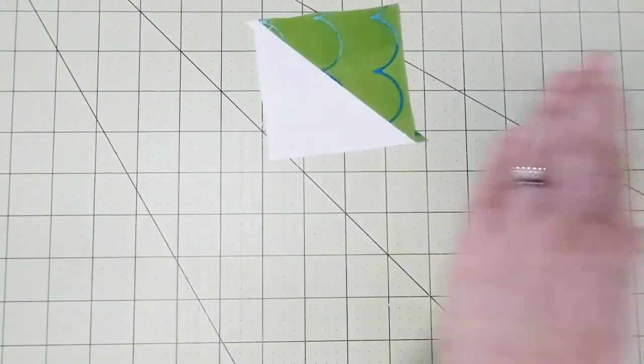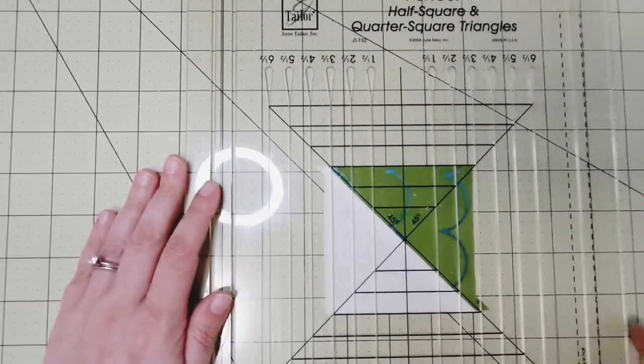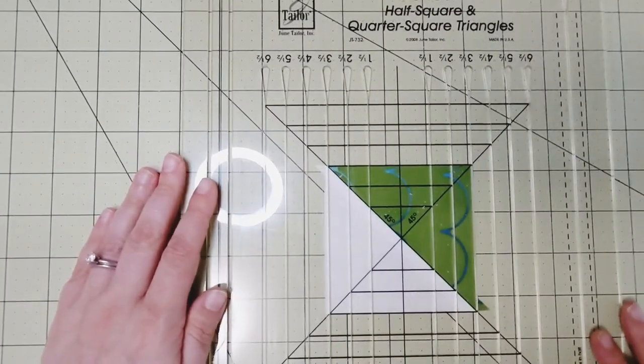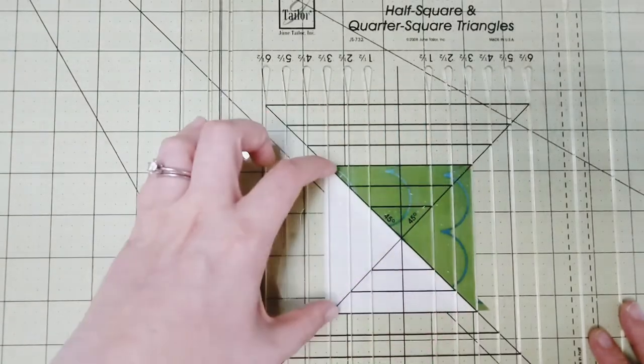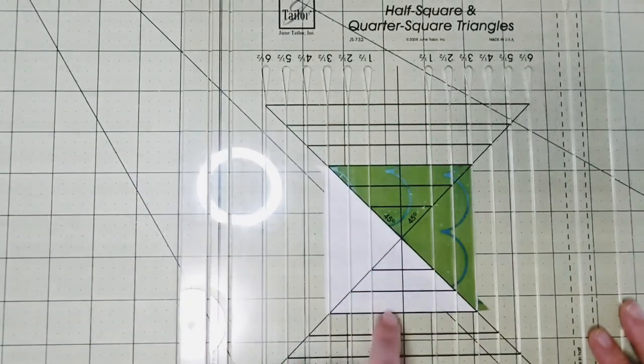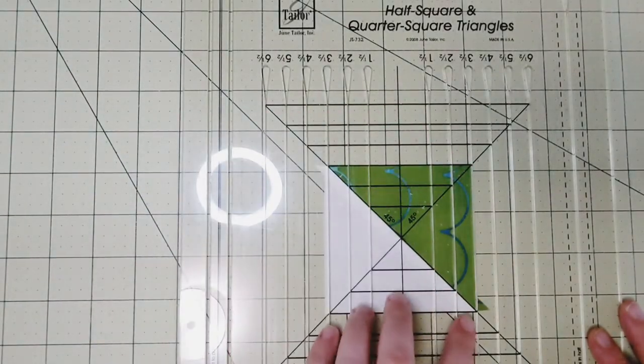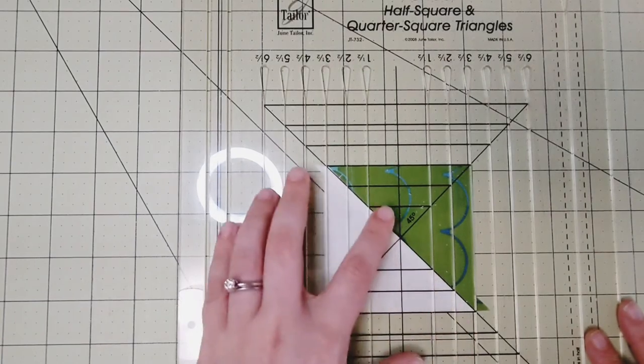Then we rotate, and we do the same thing on this side, lining up the other diagonal. And here your top and bottom should be completely trimmed, and just follow these lines on your ruler. You shouldn't have much more to do other than that.